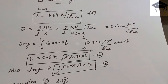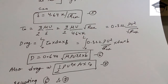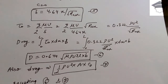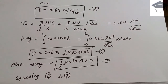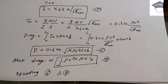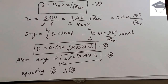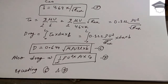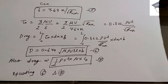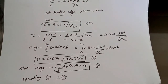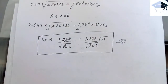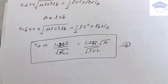Drag force is also given by (1/2)·ρU²·A·C_D, where C_D is the skin friction drag coefficient. Equating equations 6 and 7, and noting that area = length × width, the value of C_D comes out to be 1.288 / √(Re_L).